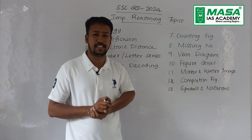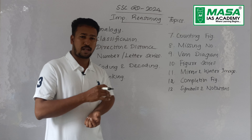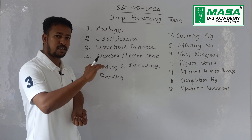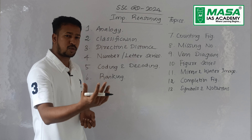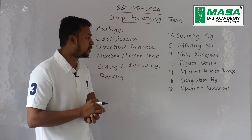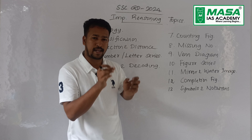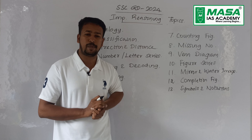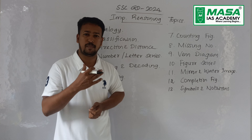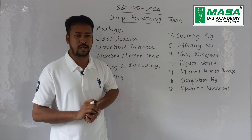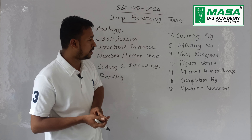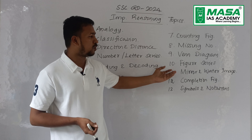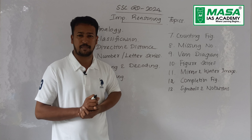The 8th one is missing number — the number will continue. The 9th one is about square truth, which is about the Venn diagram.